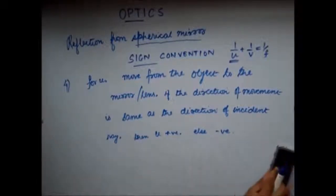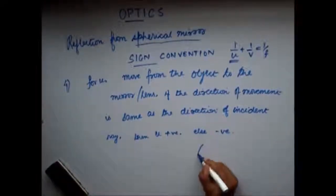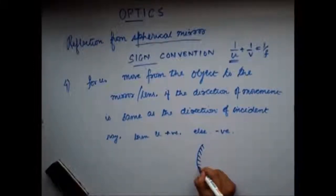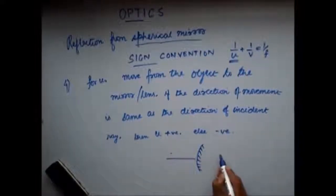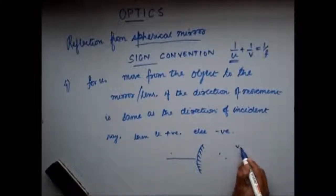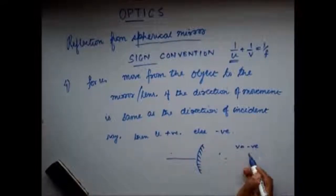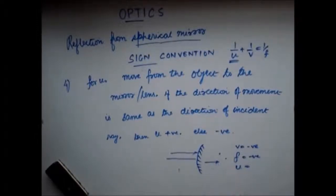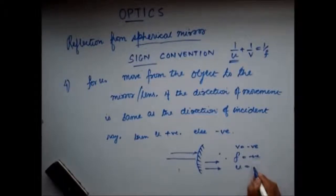Let's take another example. Again, it's like this — my object is kept here, image is formed here. Since it's a convex mirror, the image will be virtual. Focal length will be somewhere on the virtual side, so my v is negative and f is also negative. For u, I move from the object to the mirror — my direction of movement is like this. The direction of the incident ray is also like this — same direction — so u is positive.